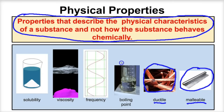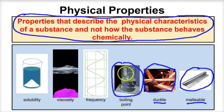If we said the boiling point of water is 100 degrees Celsius, boiling point is a physical property. It doesn't tell us how that water is going to react or change chemically into something else. It's just telling us that at 100 degrees this liquid substance is going to turn into water vapor, which is a physical change.